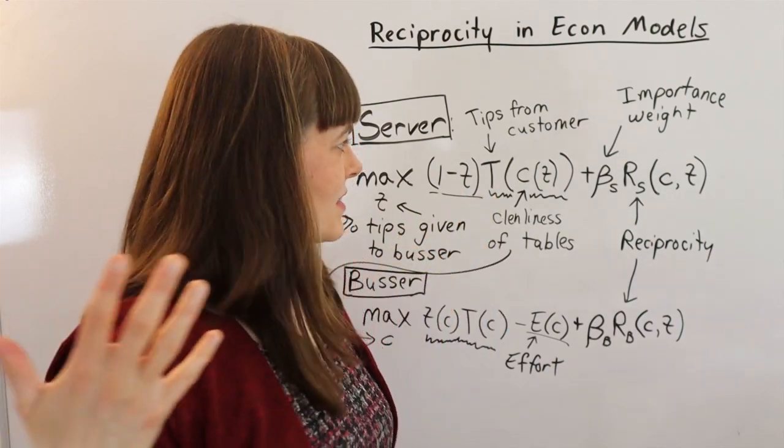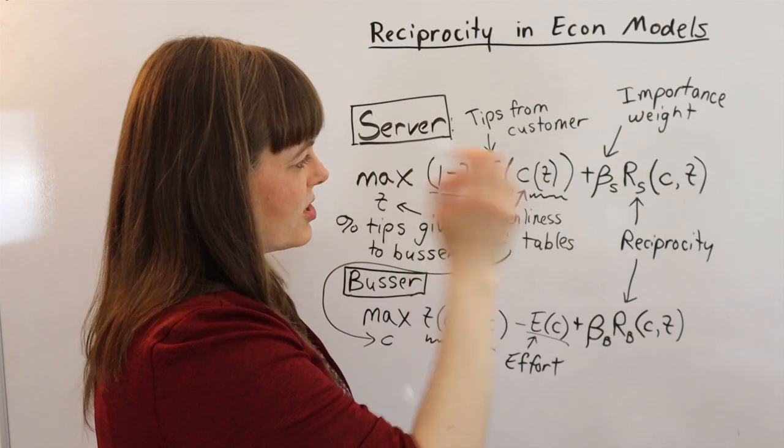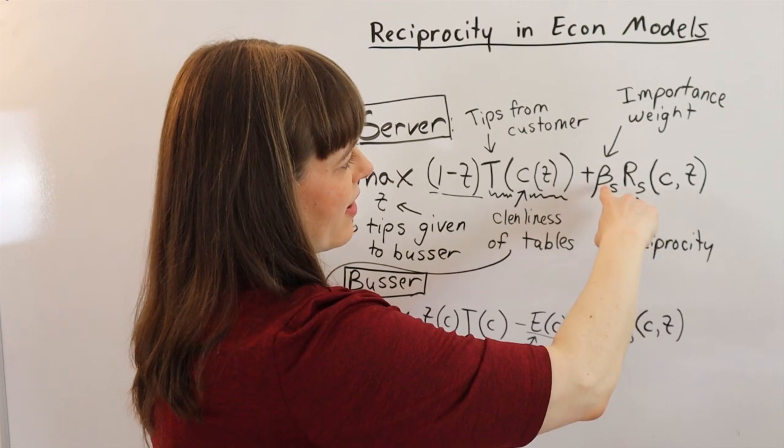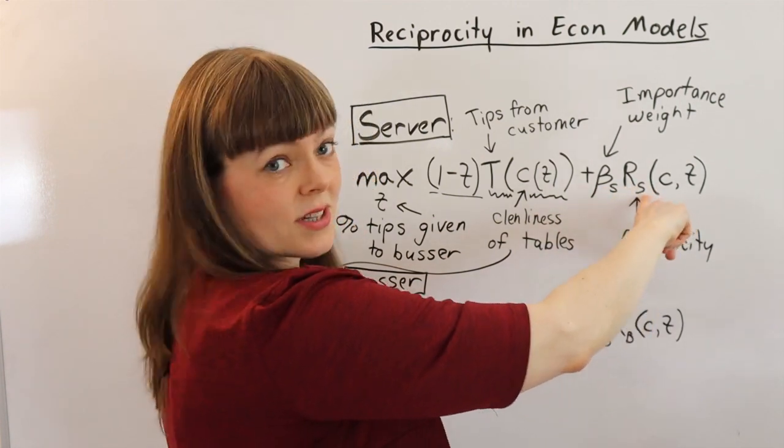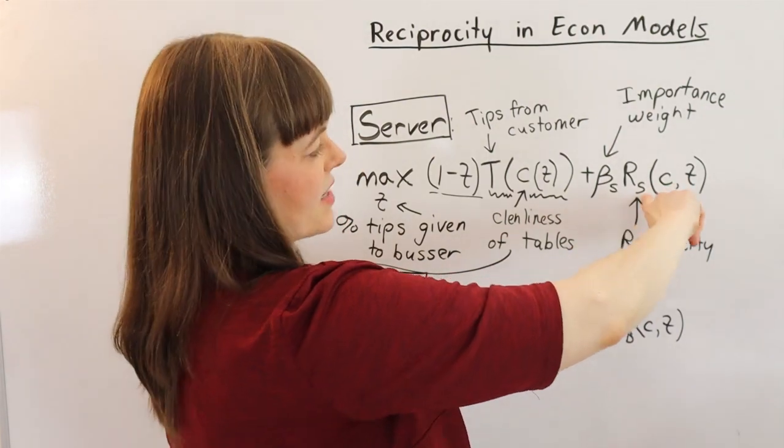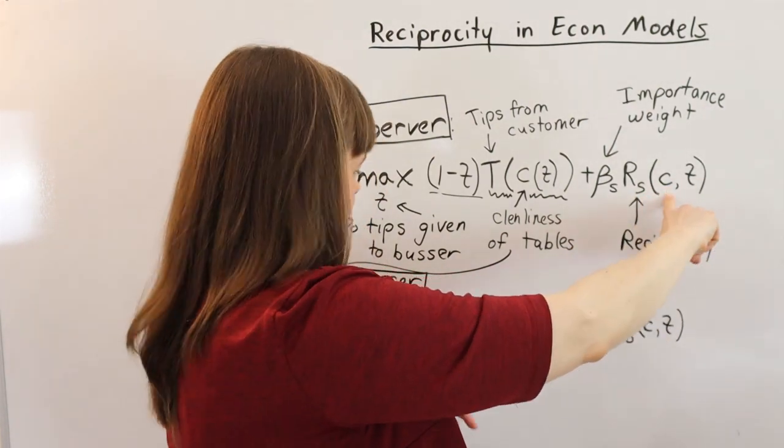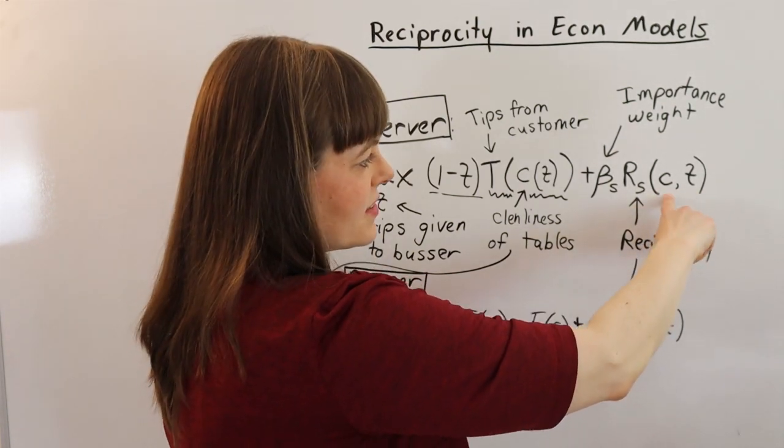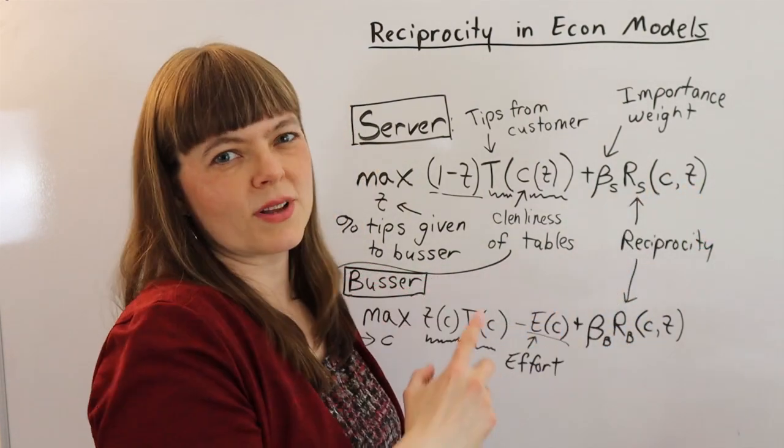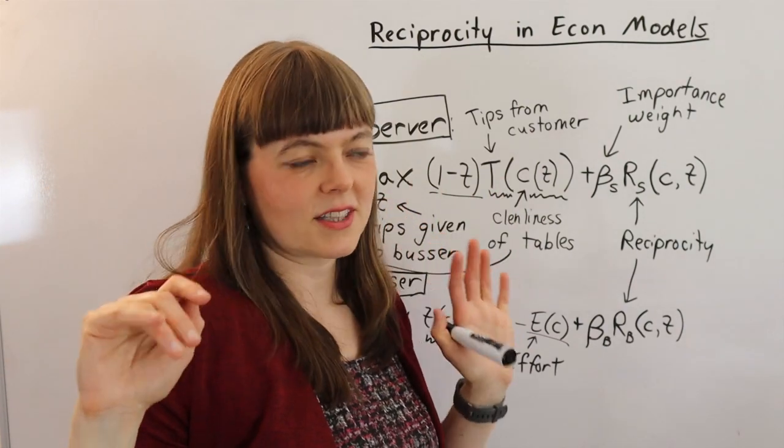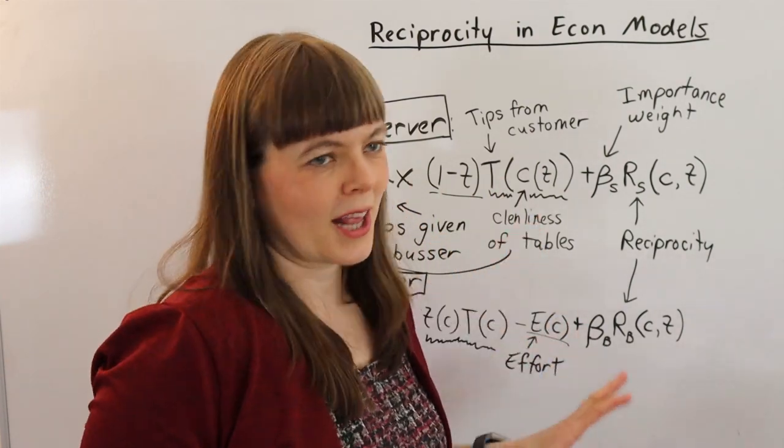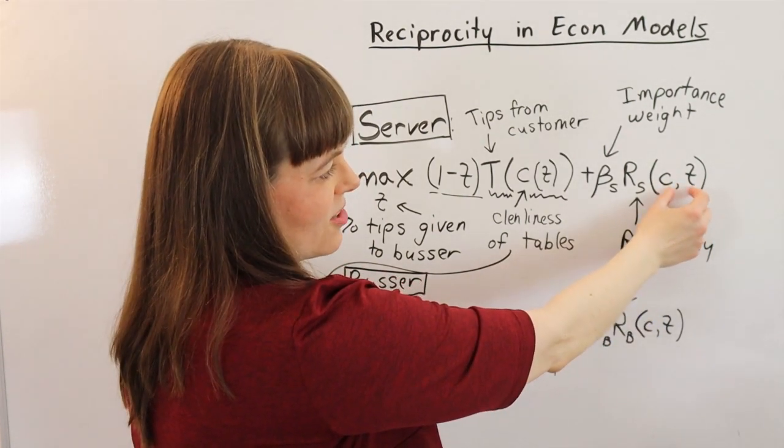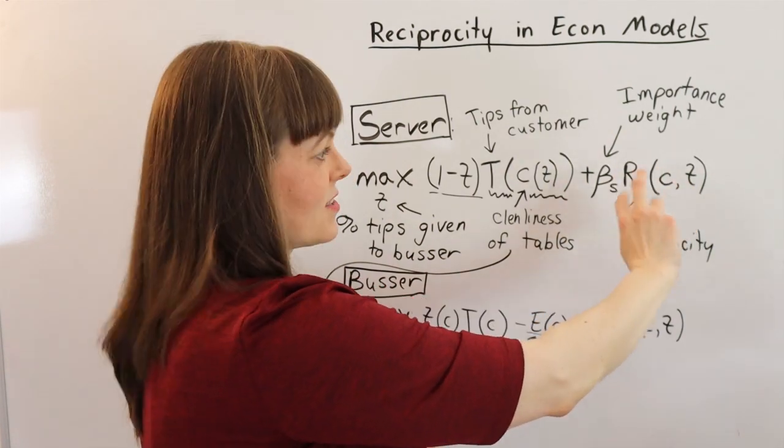It may depend how broke she is. Does she really need to think about money? In which case, maybe this might not be as big of a deal. But in any case, she has a reciprocity term. We've got importance weight to the server, reciprocity experienced by the server. And that reciprocity is a function of the cleanliness of the busser and also a function of her own tips, where this cleanliness function gives a chance for the busser to be really mean to her by avoiding keeping her tables clean. And her tips in response to that determine is this term positive or is this term negative?